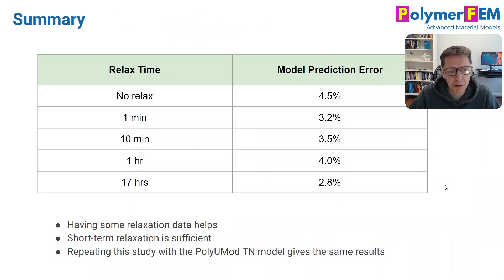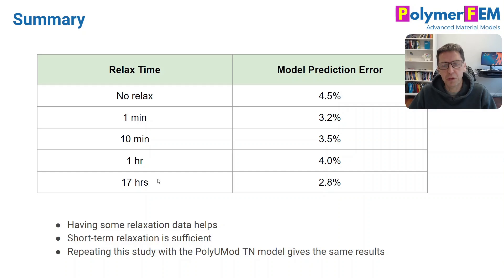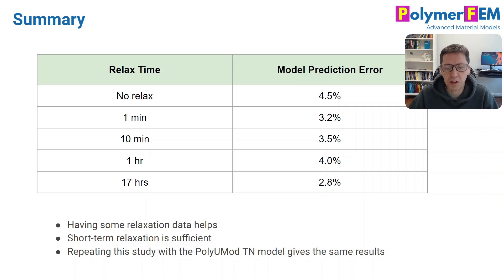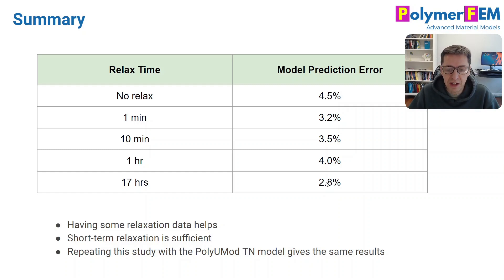Comparing all scenarios — no relaxation, and different amounts of relaxation added to calibration — we see that not having relaxation data gives the worst predictions, though it's not bad. Adding a little bit of relaxation data helps. There may be some inconsistency between the relaxation data and cyclic data, particularly regarding preload time. But importantly, we don't need 17 hours of stress relaxation — that doesn't help that much. Even with just one minute, we achieve almost the same accuracy.